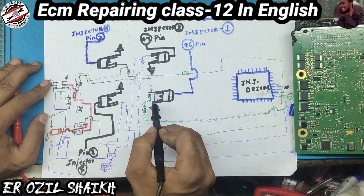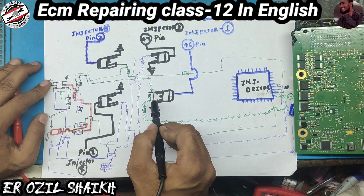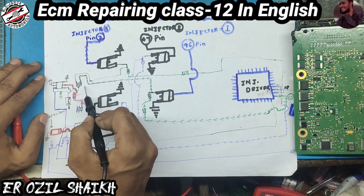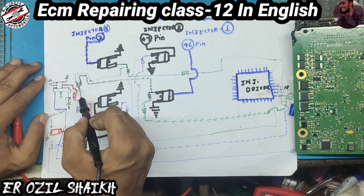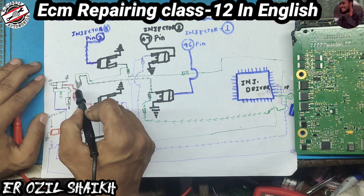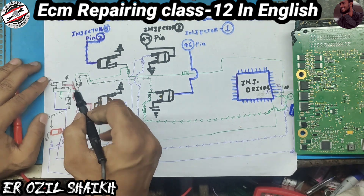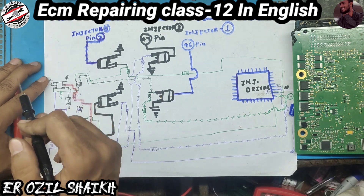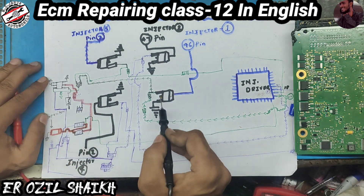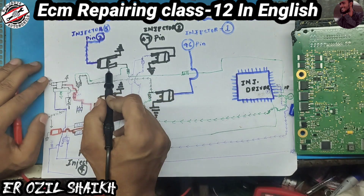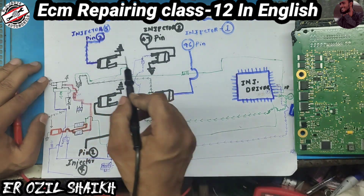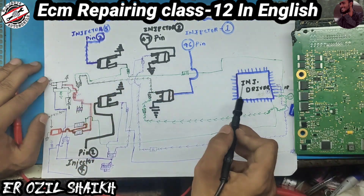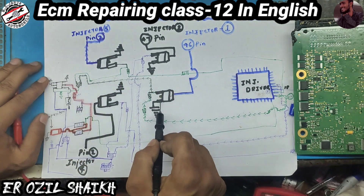When this MOSFET is getting the high side, that MOSFET gets the low side. When this MOSFET gets five volts from the power IC, it will turn on — otherwise this transistor will turn off.